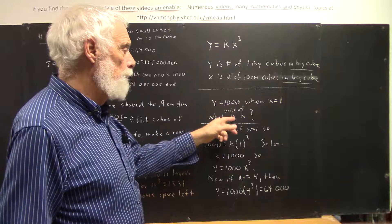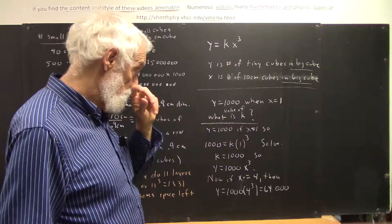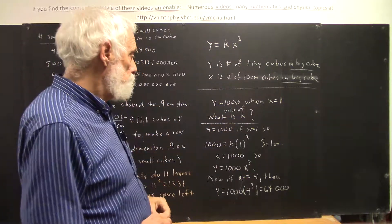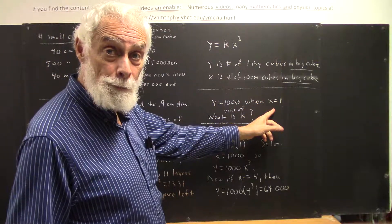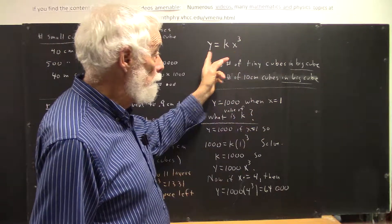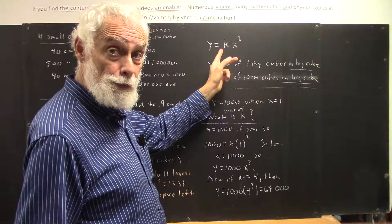Then the question is, what is the value of k? Well, if y is 1,000 when x equals 1, then you can put 1,000 in here, and you can put 1 in here, and you can solve for k.